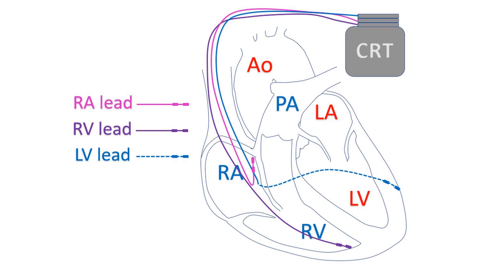While a usual pacemaker gives signals only when the heart rate falls, CRT gives pulses throughout in a programmed fashion.